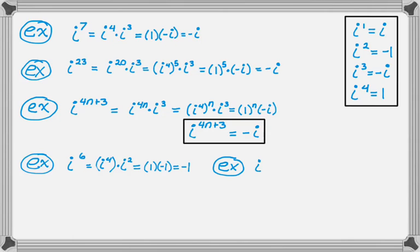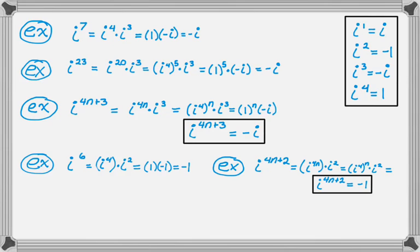That had a remainder of 2 when I divided it by 4 — 6 divided by 4 has a remainder of 2. So let's try i to the 4n plus 2. I break it up like usual, and that ends up being i squared, which of course is negative 1. So any time the remainder is 2, the answer is negative 1 — you're really just getting i squared.